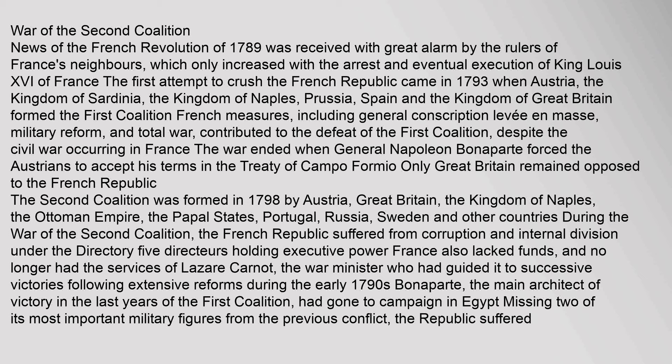The war ended when General Napoleon Bonaparte forced the Austrians to accept his terms in the Treaty of Campo Formio. Only Great Britain remained opposed to the French Republic. The second coalition was formed in 1798 by Austria, Great Britain, the Kingdom of Naples, the Ottoman Empire, the Papal States, Portugal, Russia, Sweden and other countries. During the War of the Second Coalition, the French Republic suffered from corruption and internal division under the Directory. France also lacked funds and no longer had the services of Lazare Carnot, the war minister who had guided it to successive victories. Bonaparte had gone to campaign in Egypt, and the Republic suffered.